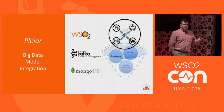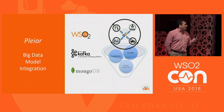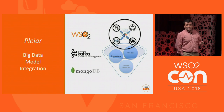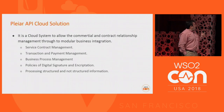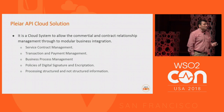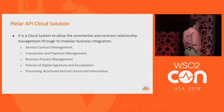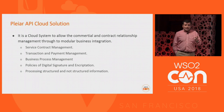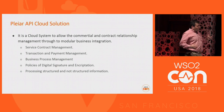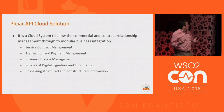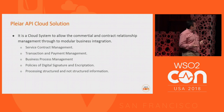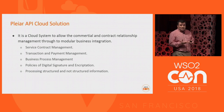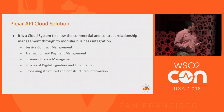This solution integrates three technologies: WCO2, Kafka, Kiwis, and MongoDB as a database. The Player solution is a cloud system to allow commercial and contract relationship management as a modular business integration. The Player has service contract management, transaction payment management, business process management, digital signature, encryption policy, and processing structure for other structured information.